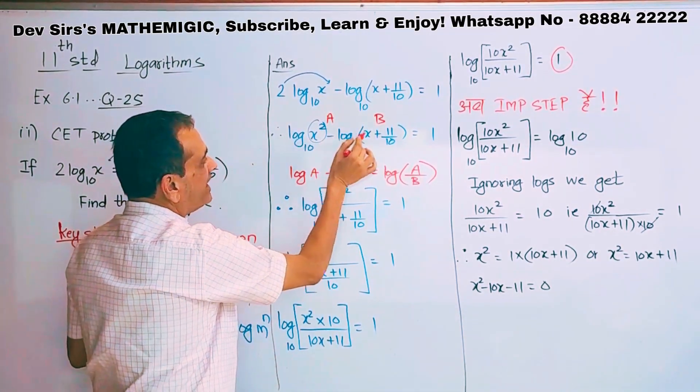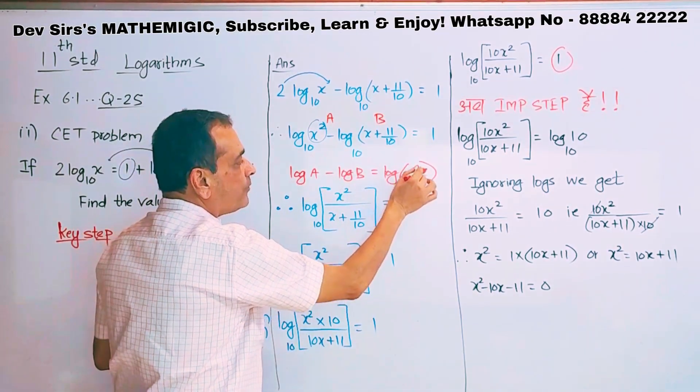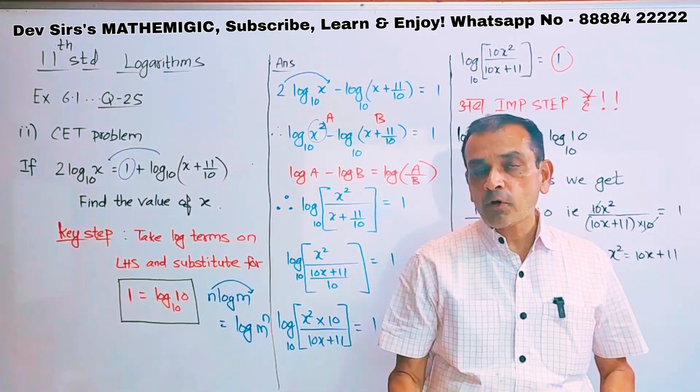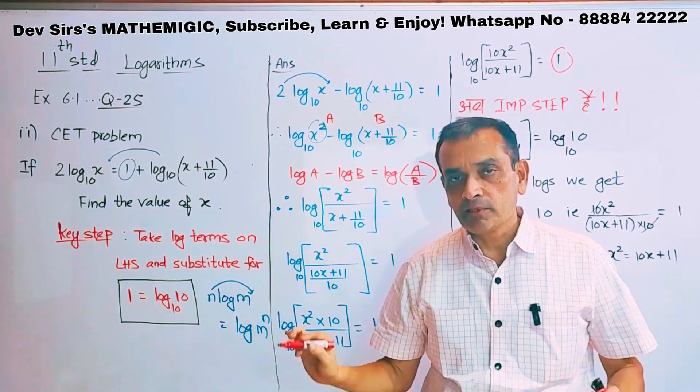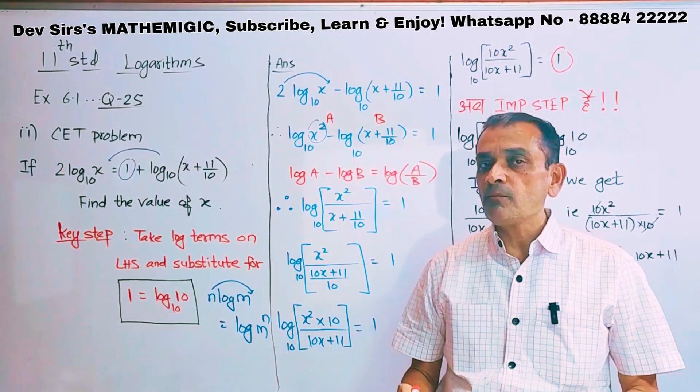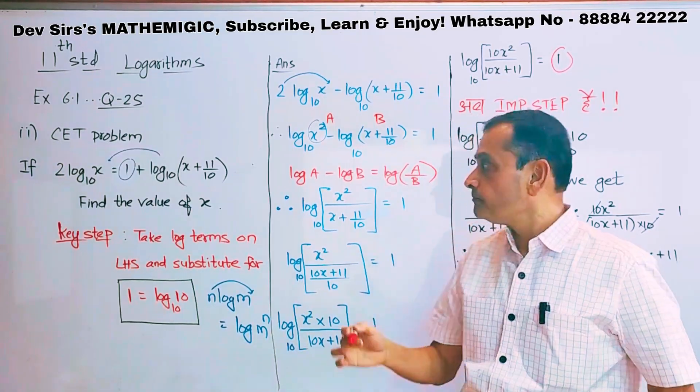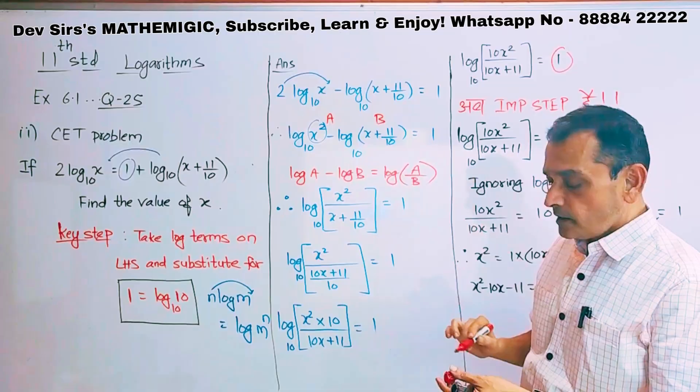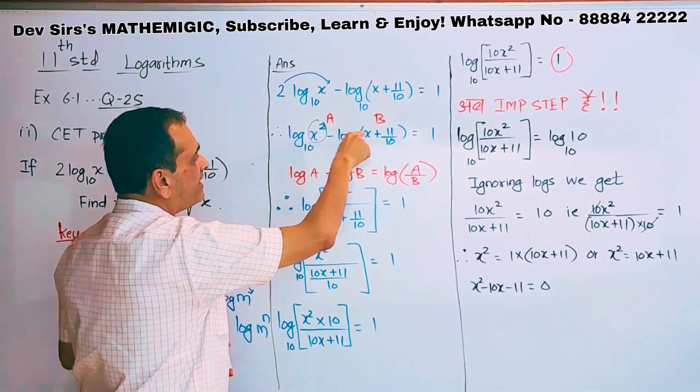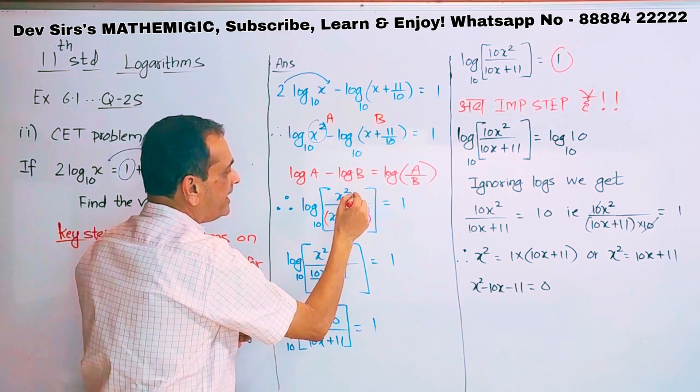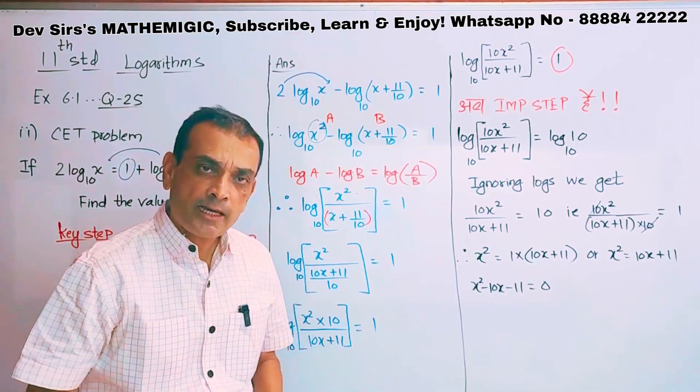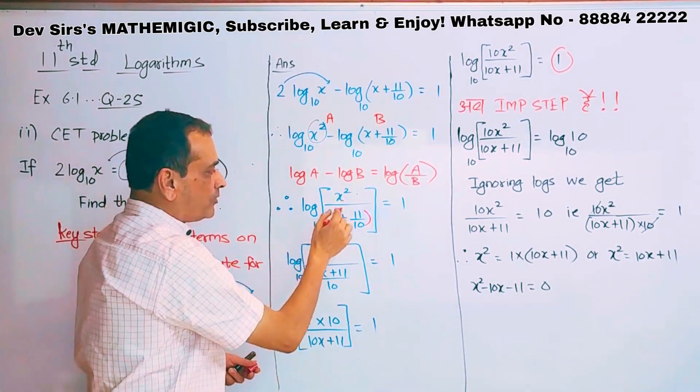Basic rule is log a minus log b, that is log of a upon b. Now every problem wherever there is a certain important rule, I will be writing that rule, even in 12th. Even in 12th, if certain 11 standard rules are applicable, I will be writing them, but from your side just learn the rules by heart. So log of a upon b on the left hand side.